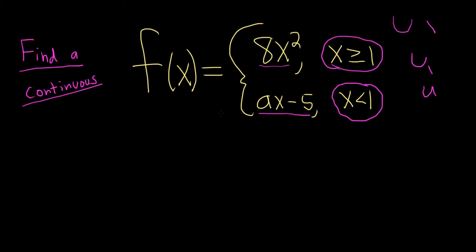the natural thing to try is to focus on the condition that tells us that the limit must exist. So we're going to focus on one-sided limits. So let's take the one-sided limits and set them equal. We're going to force the limit to exist.